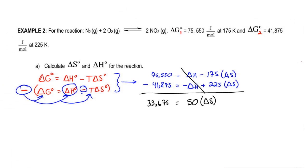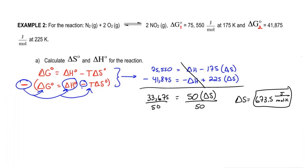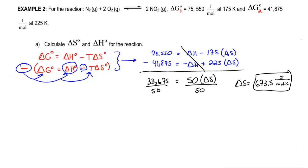We want just delta S, so we divide by 50 Kelvin on both sides, so now delta S equals 673.5 joules over moles times K. That will be our entropy value.